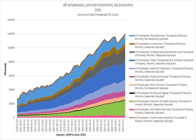Working poor. Employment is no guarantee of escaping poverty. The International Labour Organization estimates that as many as 40% of workers are poor, not earning enough to keep their families above the $2 a day poverty line. For instance, in India most of the chronically poor are wage earners in formal employment, because their jobs are insecure and low-paid and offer no chance to accumulate wealth to avoid risks. According to the UNRISD, increasing labour productivity appears to have a negative impact on job creation. In the 1960s, a 1% increase in output per worker was associated with a reduction in employment growth of 0.07%.